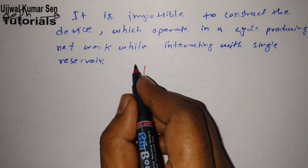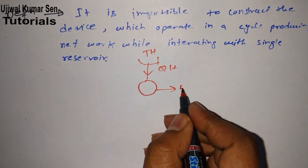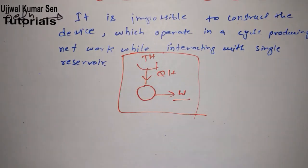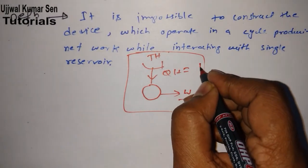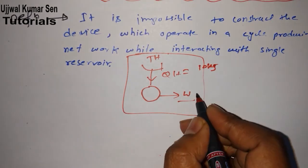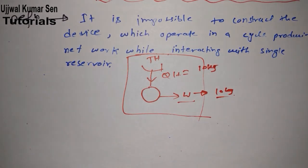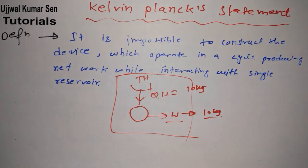Suppose that this is a device and we are having one reservoir that is TH and this is QH. They said this is impossible. Yes, of course, this is impossible because we cannot get, we did not have till now any engine which is giving a hundred percent. That means if I am giving it here 10 kilojoules,